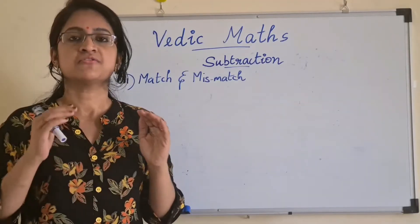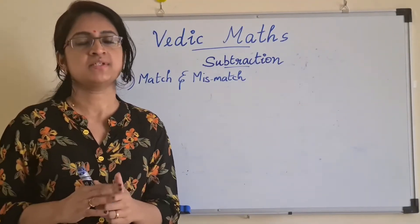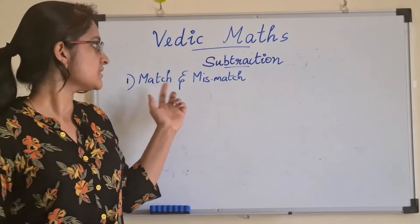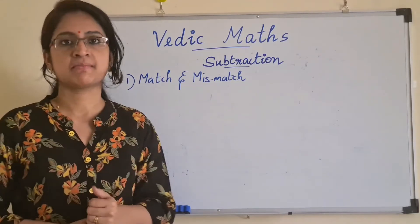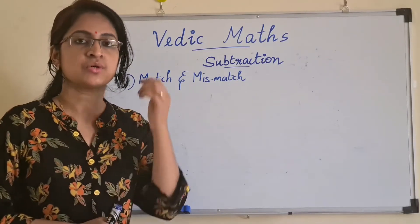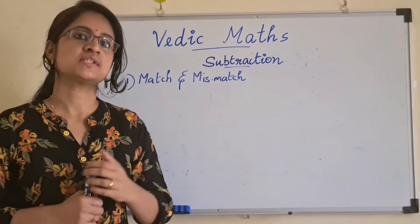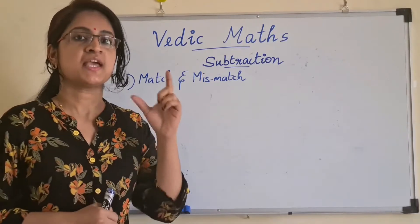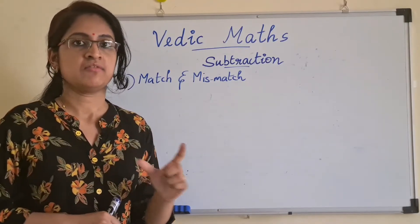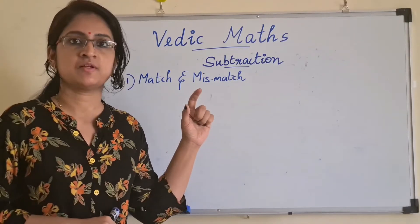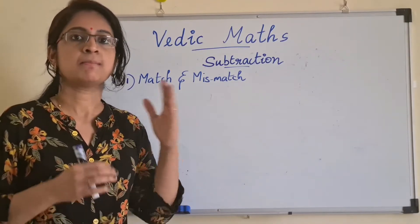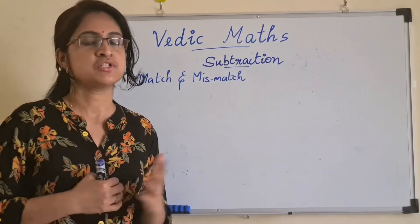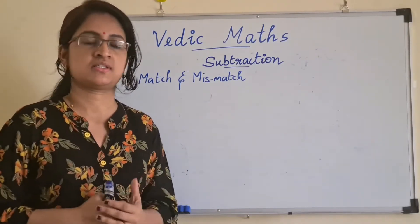The first basic concept is match and mismatch combination. In order to do the subtraction, you must be able to identify whether the given pair is a matched or a mismatched combination. I will show you what it is.